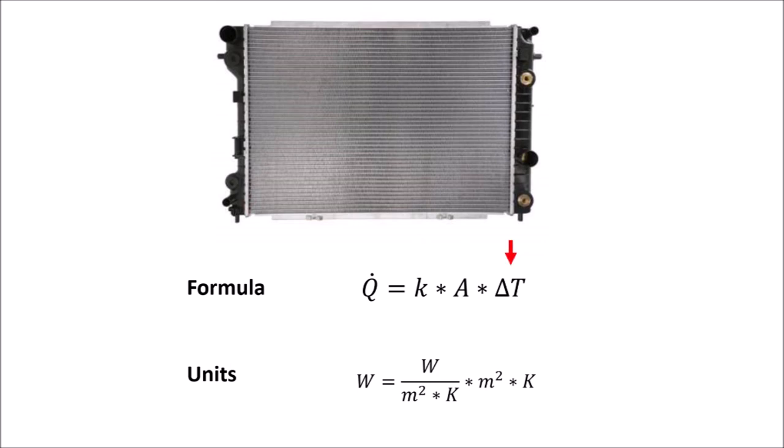The other simplification is delta T. Since car manufacturers test their cars in certain hot weather conditions, the ambient temperature is important to them. And so the delta T describes the difference between the radiator inlet and the ambient temperature. The k factor again compensates for the rest of the formula.